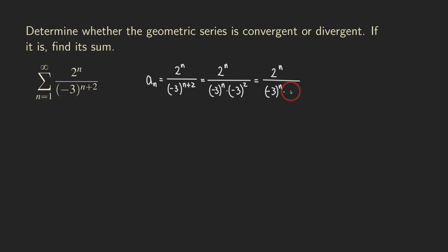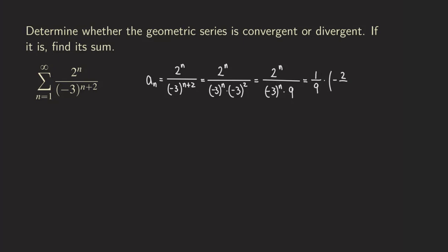Negative 3 squared gives us 9. So now you can see that both the 2 to the n and the negative 3 to the n have the same exponent, so we can now actually just put their bases together. We turn the expression into — and you may say, what about the 9 at the bottom? You can put it as 1 over 9, and then times this. You can put it as a fraction, which is an exponential expression: 2 over negative 3, and then the whole quantity raised to the n power. So we are going to be getting negative 2 over 3, and then the whole thing raised to the n power.